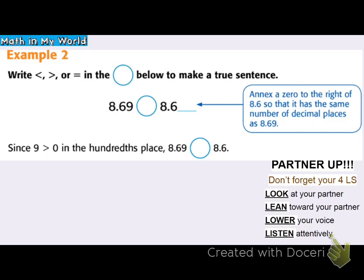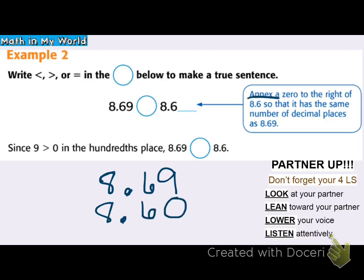Step one: I can line up the decimal — it's an option, or I can use a number line. If I line up the decimal, I can fill with zero, or annex a zero, so they have the same number of digits. Step two: after lining up the decimal, compare starting with the greatest value. Well, 8 ones is the same value, 6 tenths is the same value. So now I can clearly see that 9 hundredths is bigger than 0 hundredths.